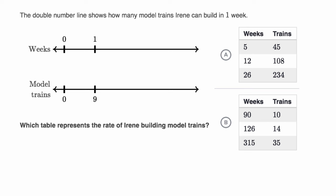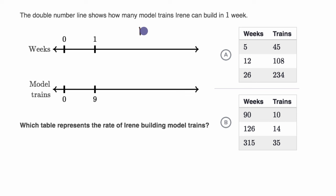The double number line shows how many model trains Irene can build in a week. In zero weeks she can't build any trains, but in one week she can build nine trains. They ask which table represents the rate of Irene building model trains. Pause this video and see if you can figure it out. Every week she can build nine trains, so the ratio of weeks to trains is one to nine.